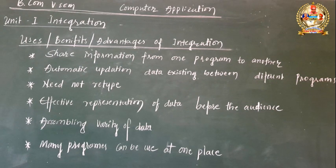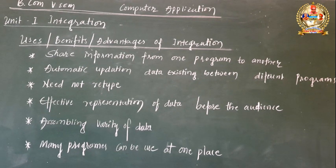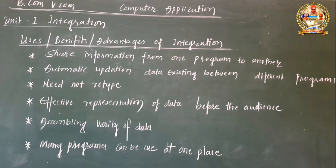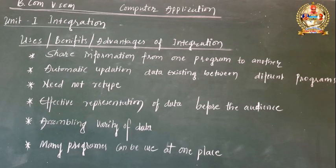The second benefit is automatic updation of data existing between different programs. We can easily update data existing between two programs with the help of integration, using the object linking integration method. With object linking, data that is copied or linked between programs can be easily updated. When the source content is updated, the destination where the data is shared will also be updated automatically.